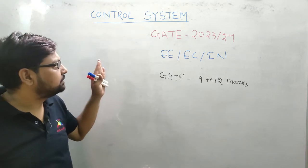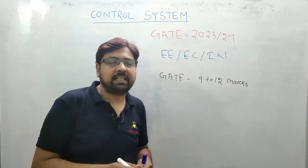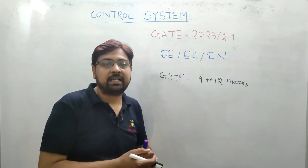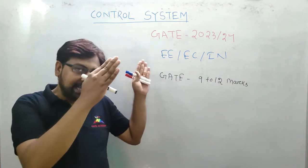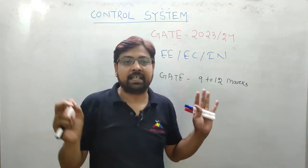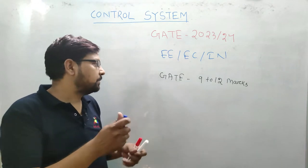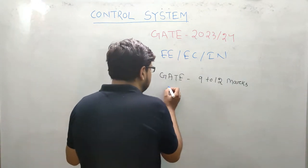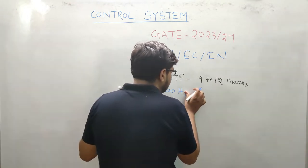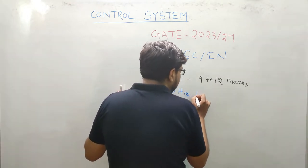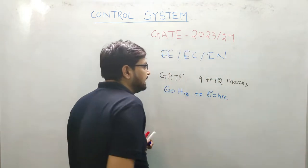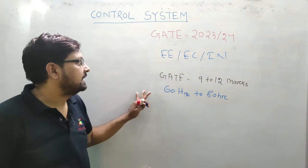उसके बाद देखेंगे, इस subject को खत्म करने के लिए और पूरा इस subject को पढ़ने के लिए हमको कितना hour लगेगा. यहाँ पर जो series चलेगा Control System का, इस series हम कितने hour में खत्म करेंगे. तो हम बोलेंगे इस series को खत्म करने के लिए हमको 60 hour से लेके 80 hour लगेंगे. वो मेरा 60 hour से लेके 80 hour तक चलेगा.